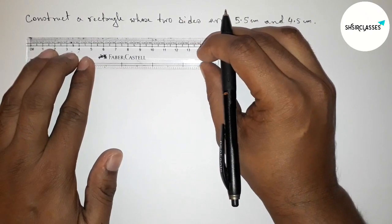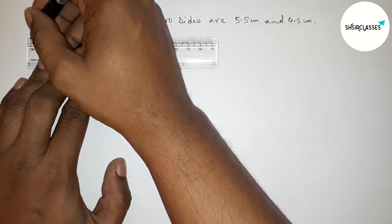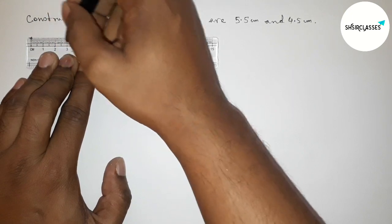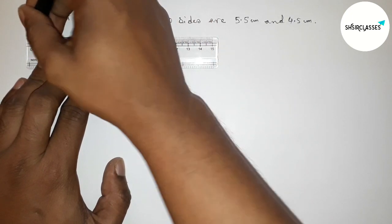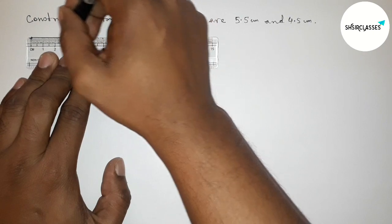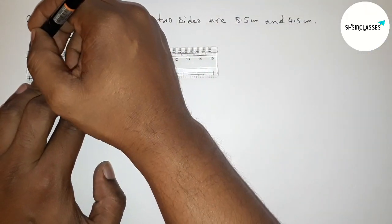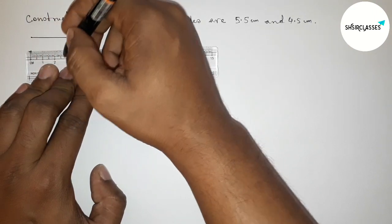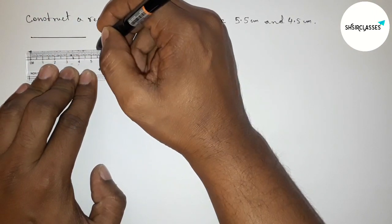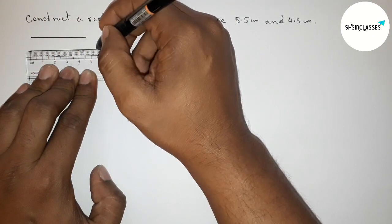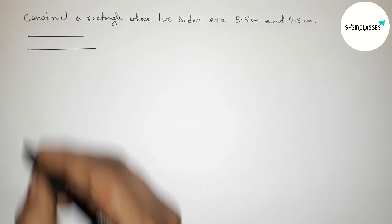First, drawing the two given sides. Drawing a 4.5 centimeter line segment — this is 4.5 centimeters. And drawing a 5.5 centimeter line segment — this is 5.5 centimeters.